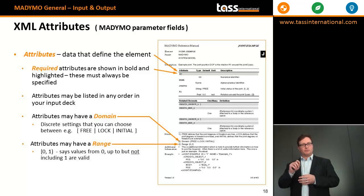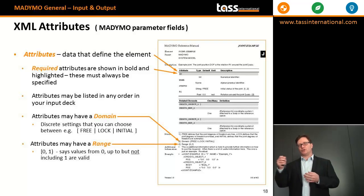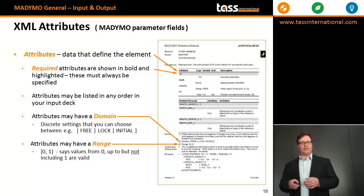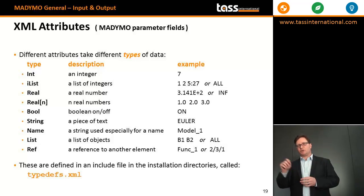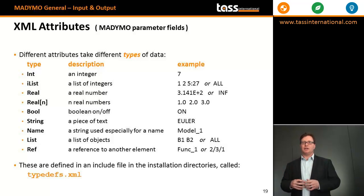Required attributes are written in bold and are automatically inserted together with the XML elements when using XMagic. Attributes may have a domain of selectable values or a range, and the value entered must be within that range — this is also checked by the parser of the Madimo solver. There are different types of data: integer, real, boolean, or text. All of this is dictated by the DTD, which refers to the type definition file to understand what kind of parameter is meant.